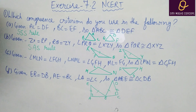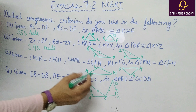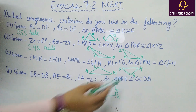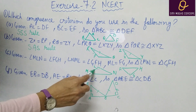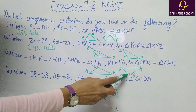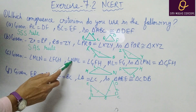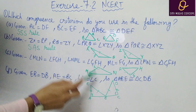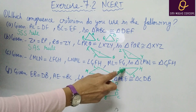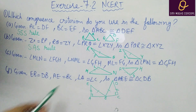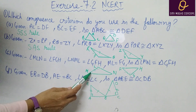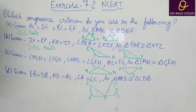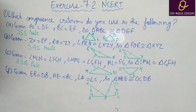For the next part involving triangles MLN and FGH: angle M equals angle F, side ML equals side FG, and another angle is equal. So this will be the Angle-Side-Angle (ASA) rule.